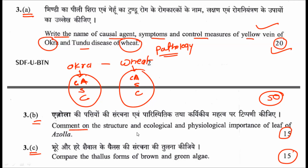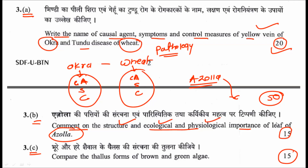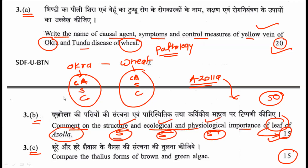The second sub-question asks you to comment on the structure and ecological and physiological importance of the leaf of Azolla. Azolla is an important plant from many perspectives, and this question is subdivided into three sections — structure, ecological role, and physiological importance — each carrying 5 marks, totalling 15 marks.